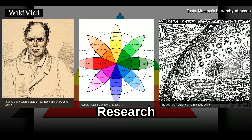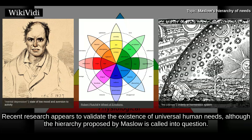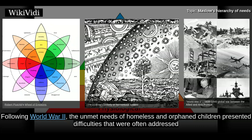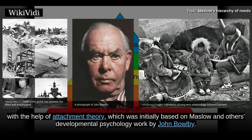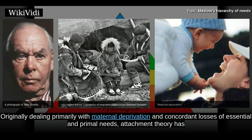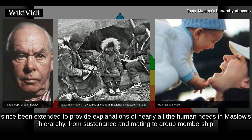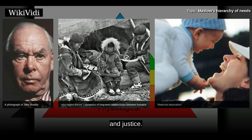Recent research appears to validate the existence of universal human needs, although the hierarchy proposed by Maslow is called into question. Following World War II, the unmet needs of homeless and orphaned children presented difficulties that were often addressed with the help of attachment theory, which was initially based on Maslow and others' developmental psychology work by John Bowlby, originally dealing primarily with maternal deprivation. Attachment theory has since been extended to provide explanations of nearly all the human needs in Maslow's hierarchy, from sustenance and mating to group membership and justice.